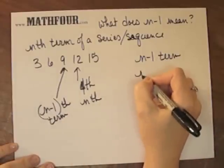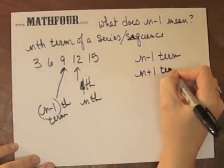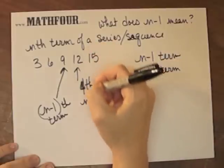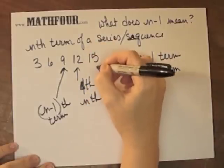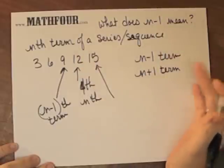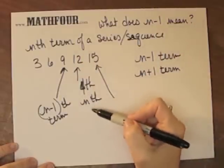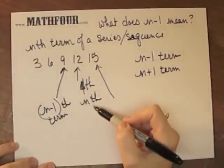So you can also have the n plus 1 term. So if this is the nth term, and remember, n just means whatever random number that you want. It could be the 1,000th term or the 75th term.